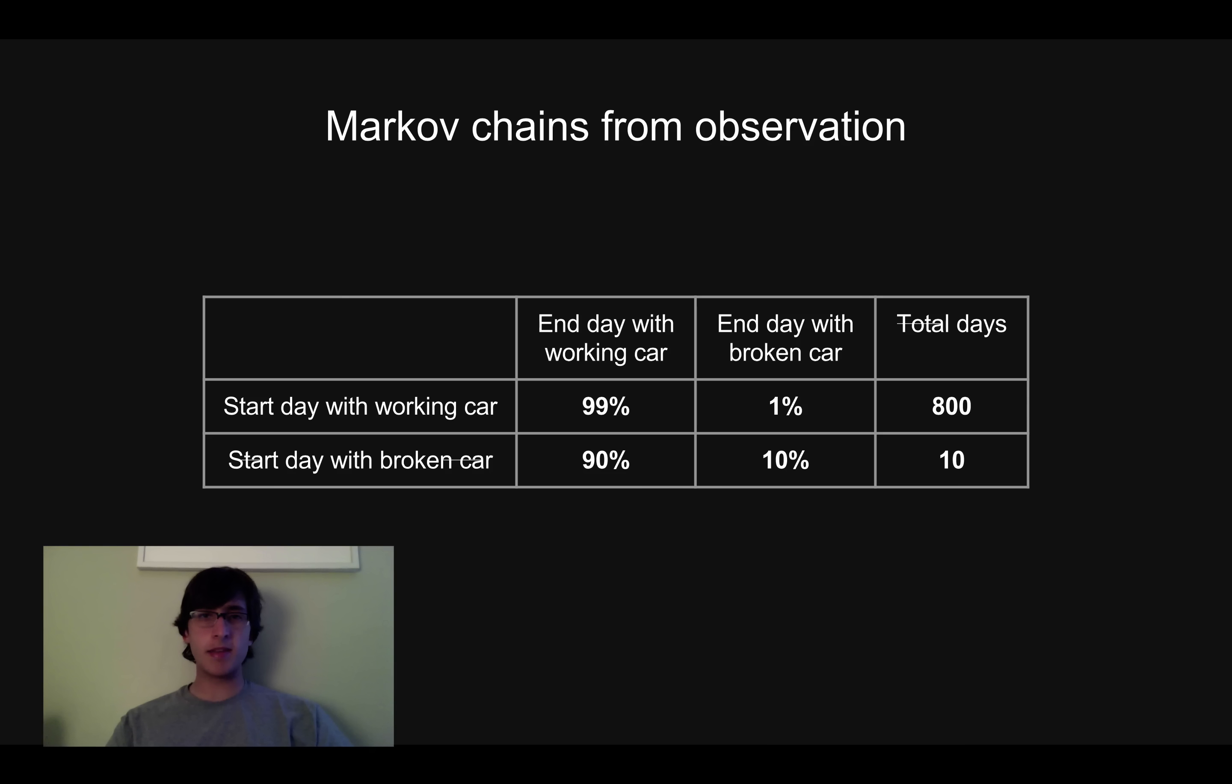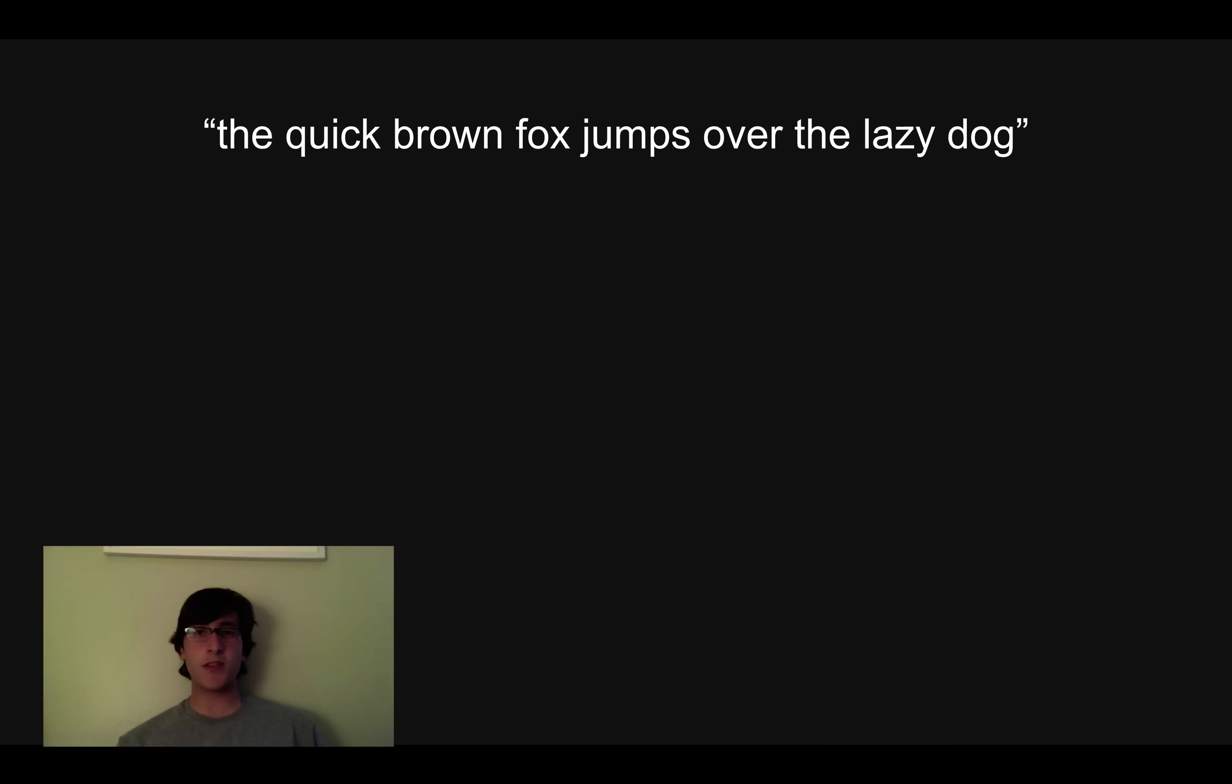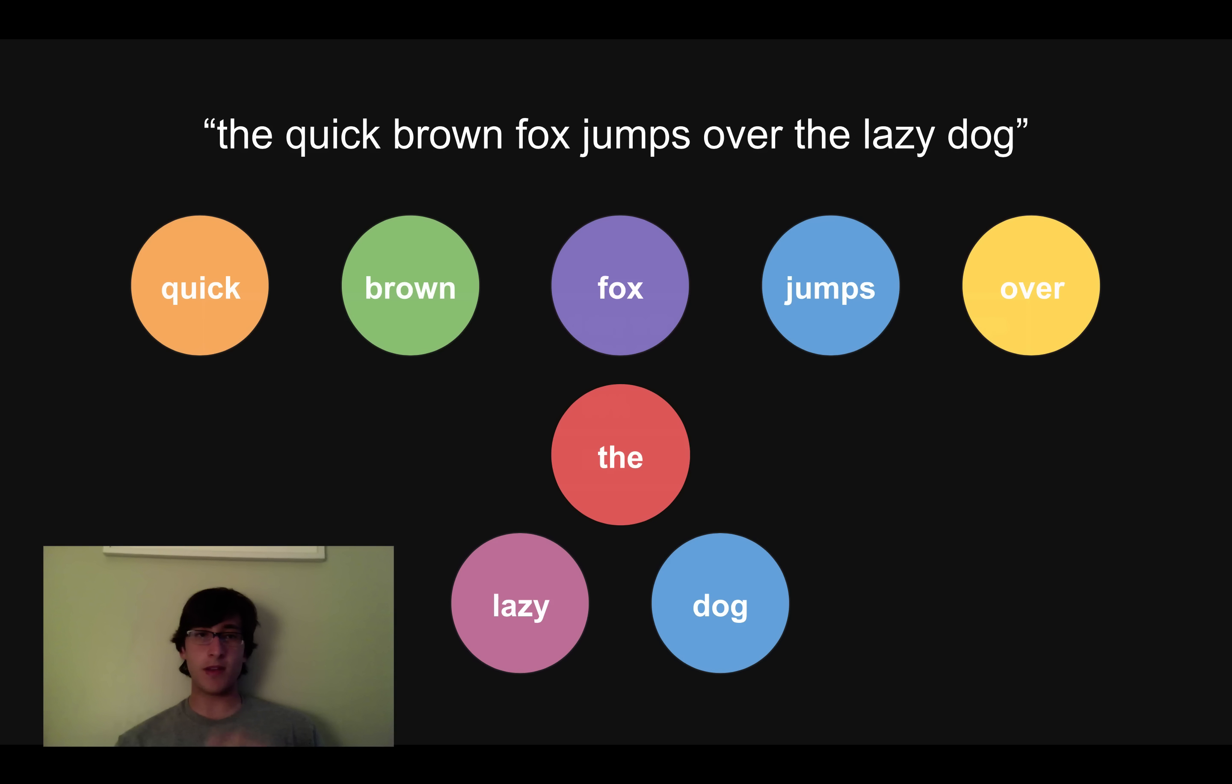So how do we apply this idea of states and transition probabilities to something like the example I showed at the beginning of the video, where I used a Markov chain to generate a bunch of text. What we're really looking for is a way to represent a piece of text as a bunch of states and transitions between states. And so I'm going to show how to do this and I'm just going to use a toy sentence, the quick brown fox jumps over the lazy dog, because it's pretty simple to work with this small amount of text. The first thing I'm going to do is create a state for each word that appears in the sentence. So I have a state for quick, a state for brown, a state for the.